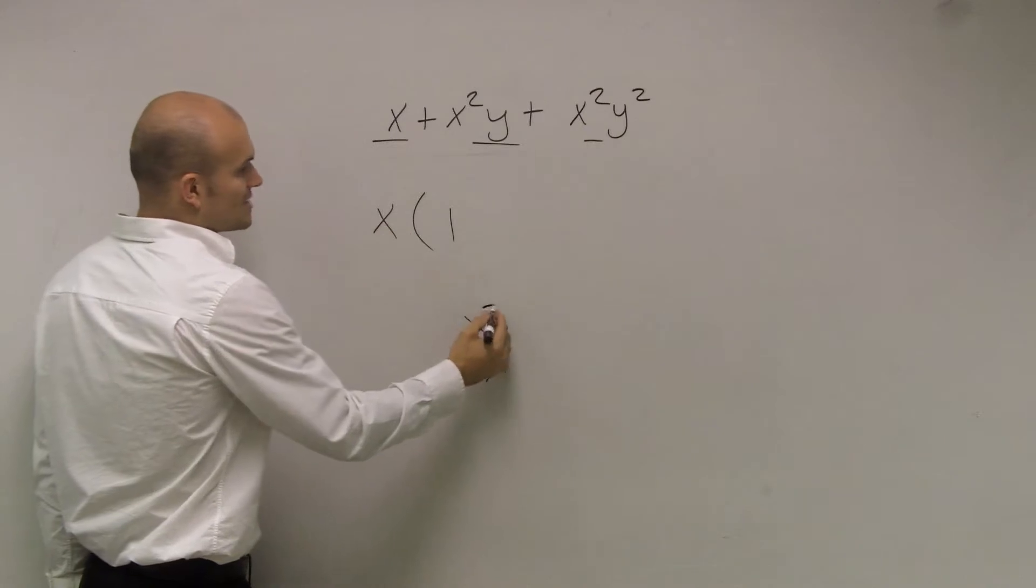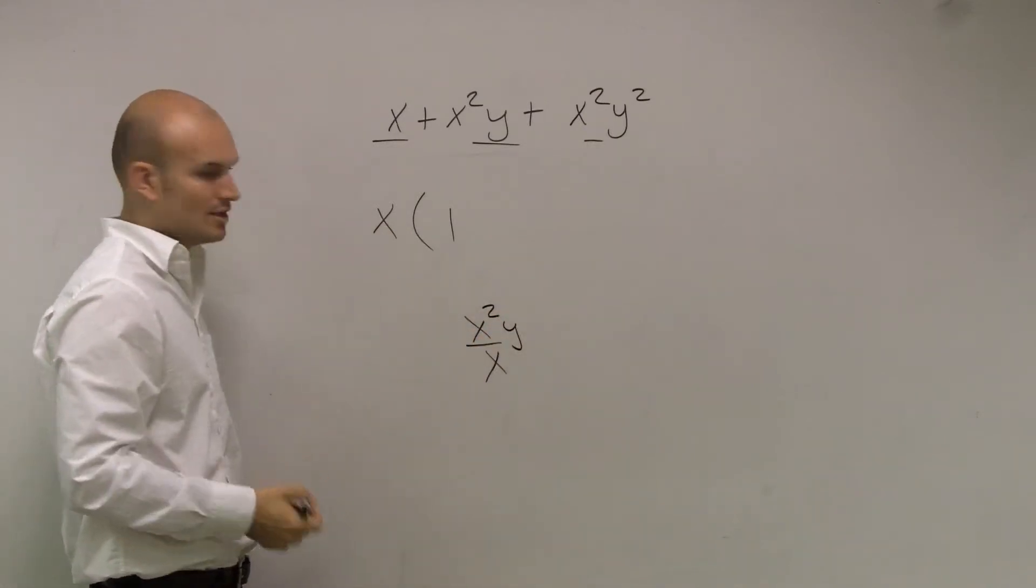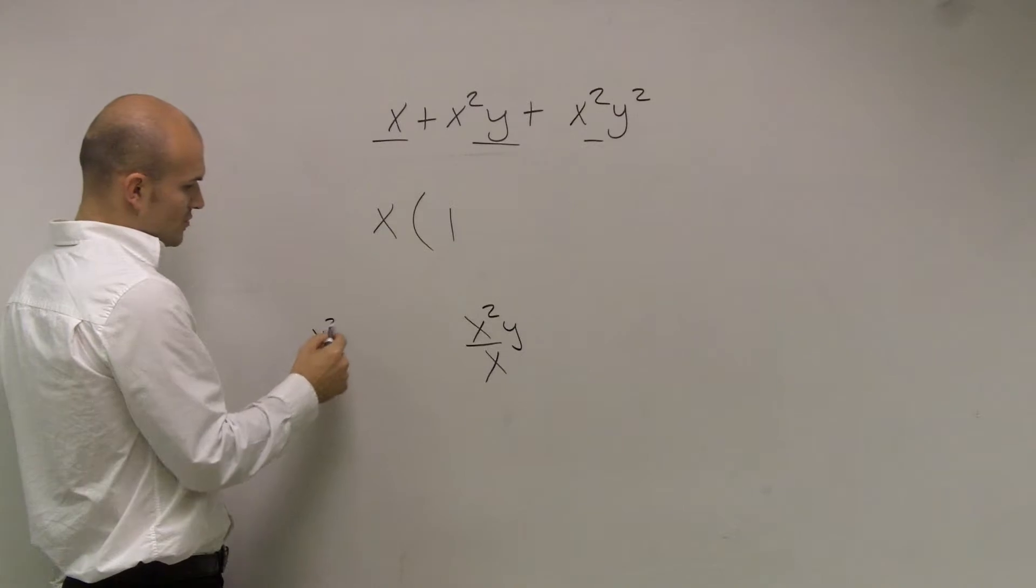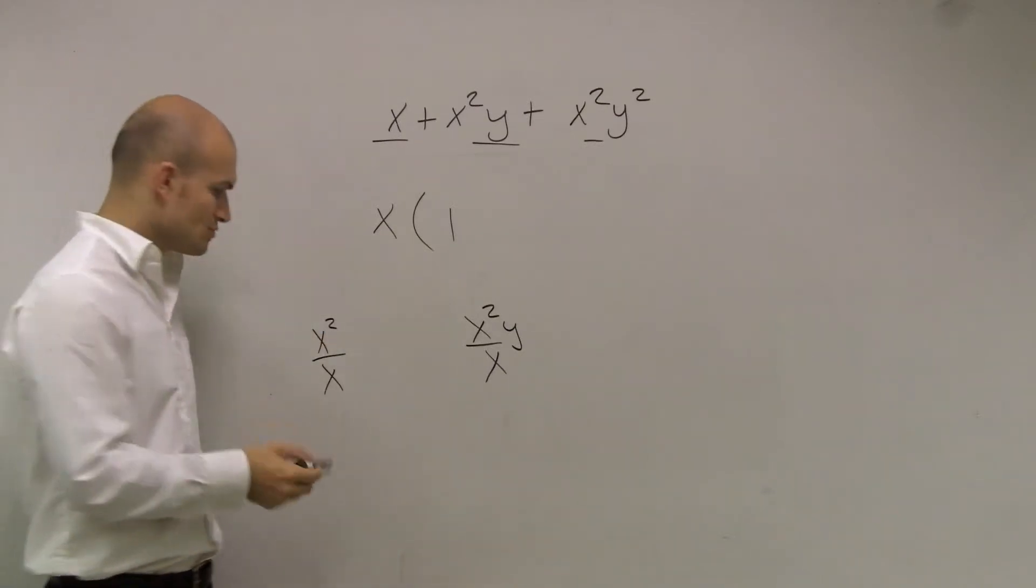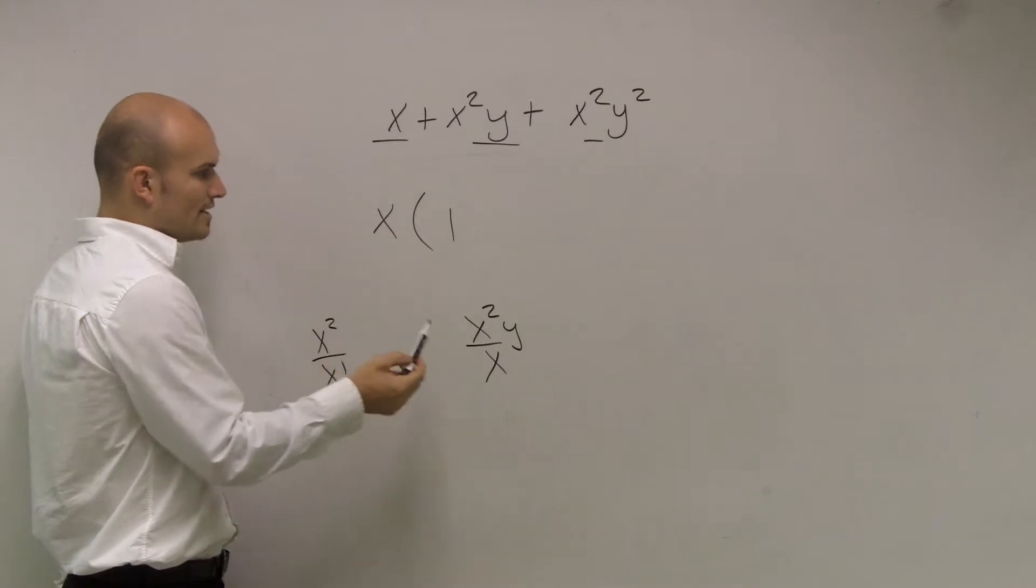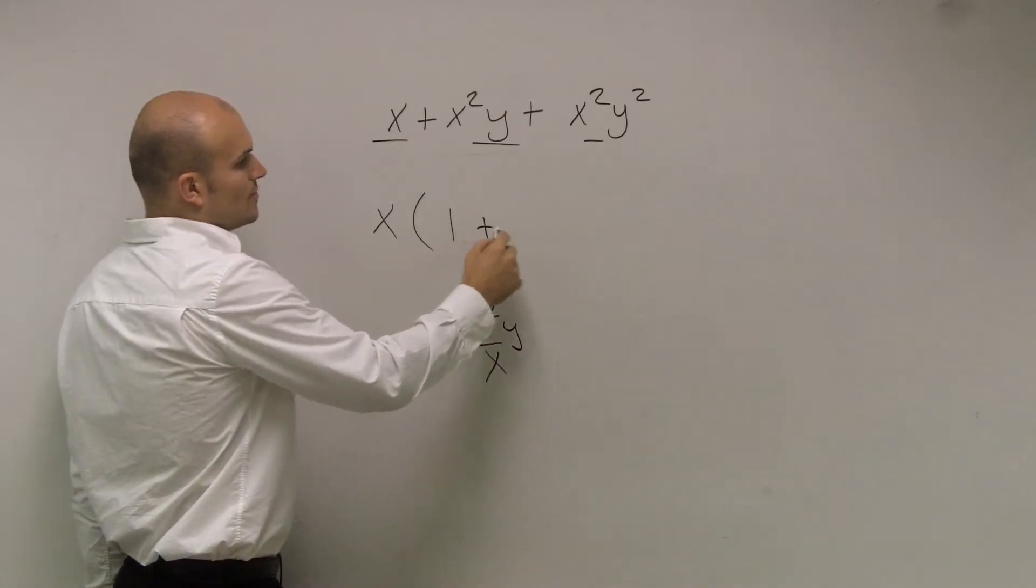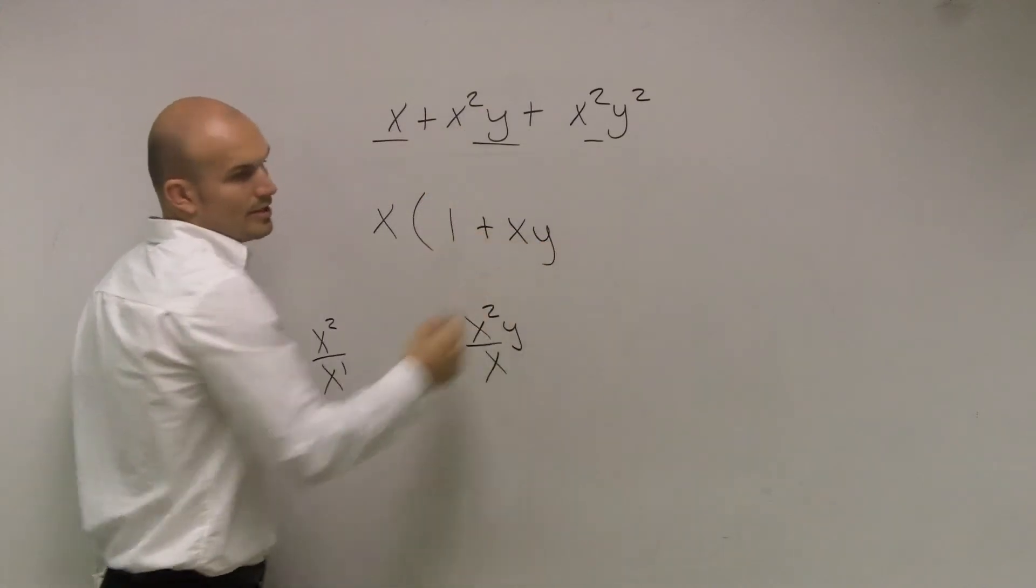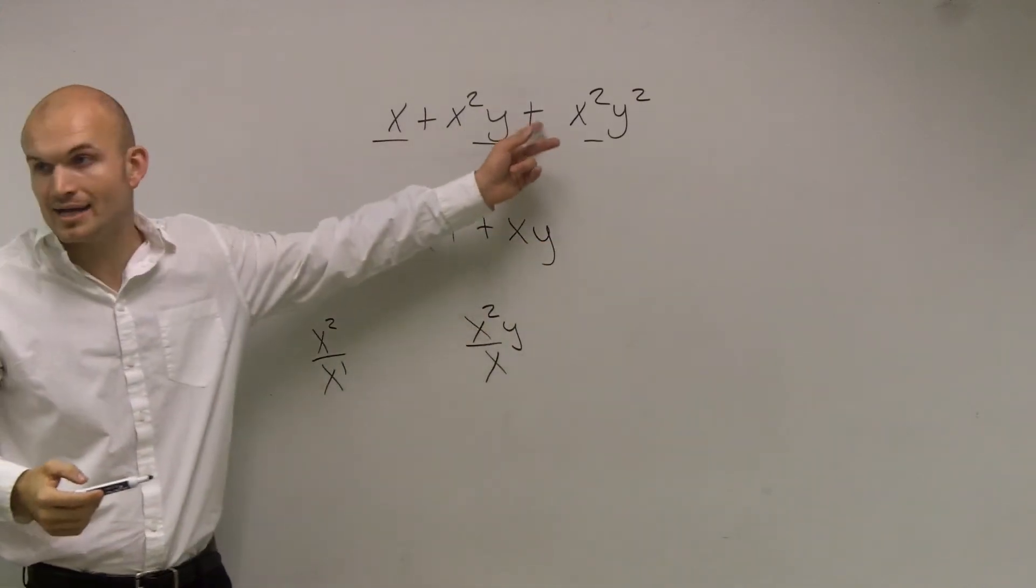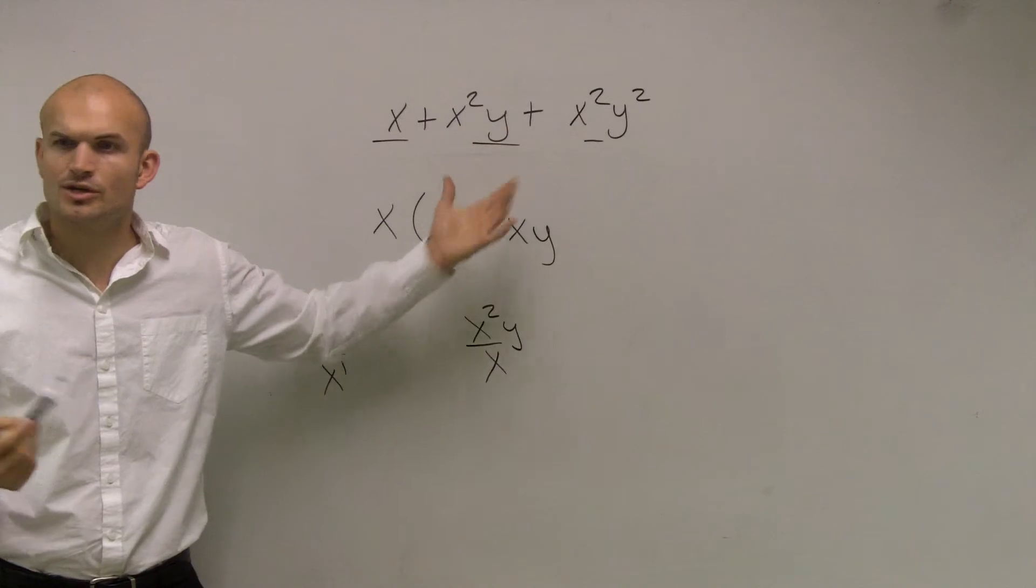Then I have x squared y divided by x. What does that look like? Well, remember, x squared divided by x. What do we do with the exponents when we divide? You subtract. 2 minus 1 is 1, so that's just going to give you an x to the first power, but then that y is still going to be there because you can't divide your y by the x. They're not like terms.